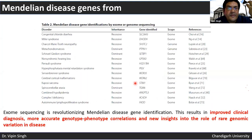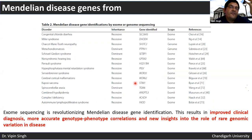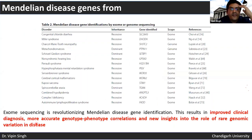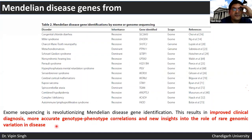Some Mendelian diseases have been studied via next-generation sequencing. This is providing improved clinical diagnosis, more accurate genotype-phenotype correlations, and new insights into the role of rare genomic variations in disease.